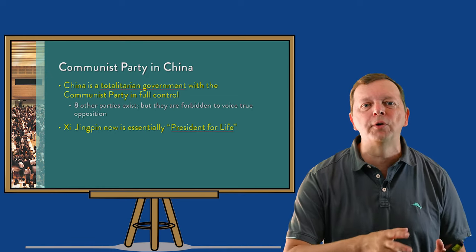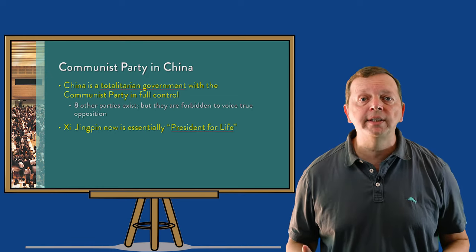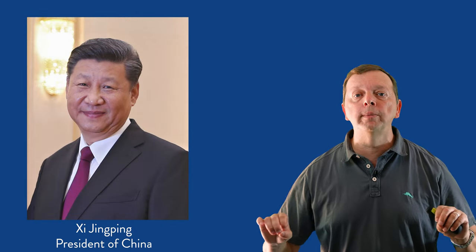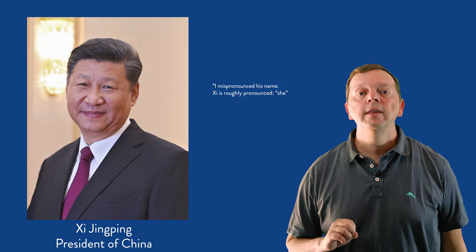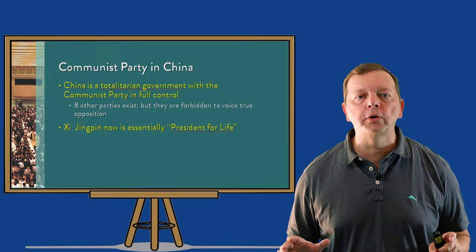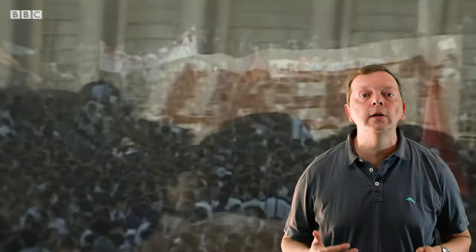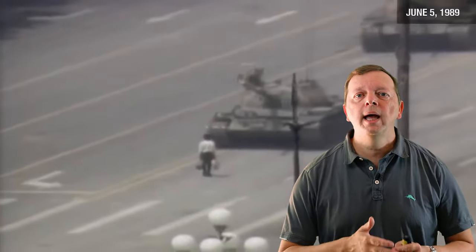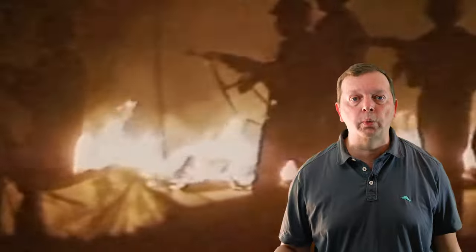In 2018, the Communist Party took the step to remove term limits for its president, which essentially made Xi Jinping president for life. Pro-democracy protests were squashed in 1989. For nearly two months that year, students held a protest occupying the historical Tiananmen Square. The protests would end with 300,000 soldiers moving into Beijing and clearing the square of all protesters. There were at least 10,000 protesters arrested and thousands were killed. After Tiananmen Square, any pro-democracy reform efforts pretty much came to a grinding halt as the government reasserted its control over the people.